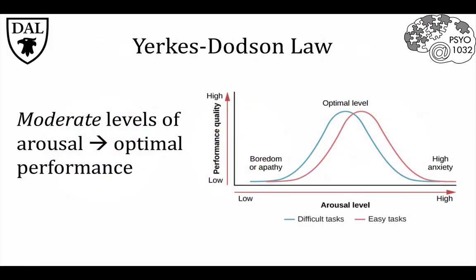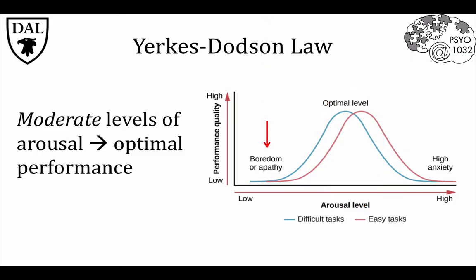The Yerkes-Dodson law is not strictly related to motivation, but it uses the idea of optimal arousal to explain effects on performance. This law states that moderate levels of arousal lead to optimal performance. At low levels of arousal, such as during boredom or apathy, people show very poor or even no performance on a given task. At high levels of arousal, such as states of panic, task performance on just about anything is quite bad. There's a sweet spot in the middle where just the right amount of alertness leads to the best task performance.